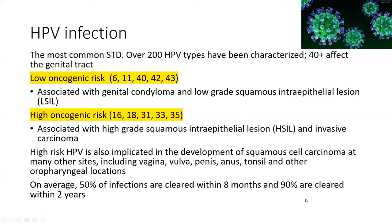The root cause of most cervical neoplasia is HPV virus infection — the most common sexually transmitted disease, with over 200 strains, around 40 of which infect the genital tract. These are divided into low oncogenic risk strains (HPV 6, 11, 40, 42, and 43), associated with genital condyloma and low-grade squamous intraepithelial lesion, and high oncogenic risk strains (HPV 16, 18, 31, 33, and 35), associated with high-grade squamous intraepithelial lesion and invasive carcinoma.